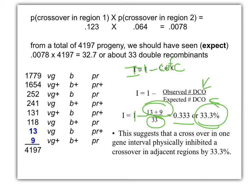This suggests that a crossover in one region, one of the single crossovers, physically inhibited a crossover in an adjacent region by 33.3%. All they're saying is there's 33.3% less double crossovers than we'd expect with no interference. If I said there's zero interference, we'd have 33. But we only ended up with 22. 22 is 33% less than 33. That's how you calculate interference.